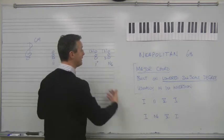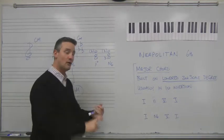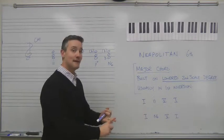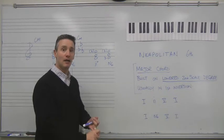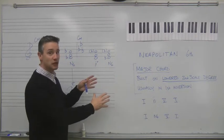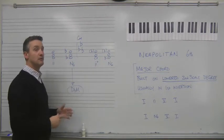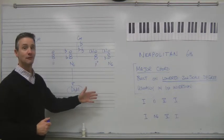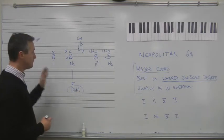In C major and C minor, it's going to be a D-flat major chord because it's built on the lowered second scale degree, and the second scale degree is the same in major or minor. The difference is in how much else you have to change to get to the major chord that you need for the Neapolitan sixth.